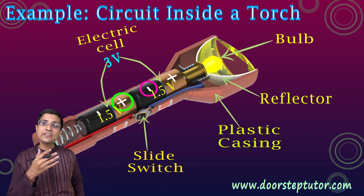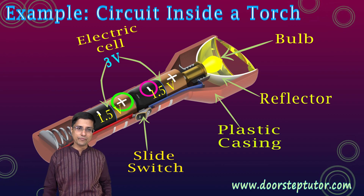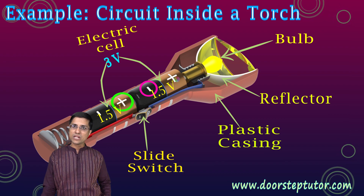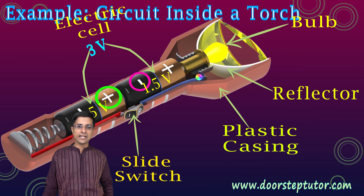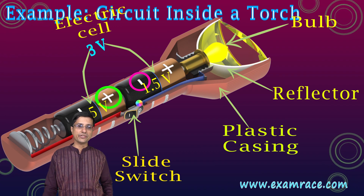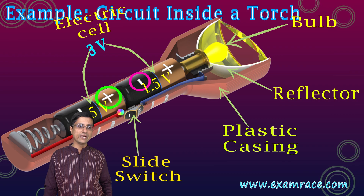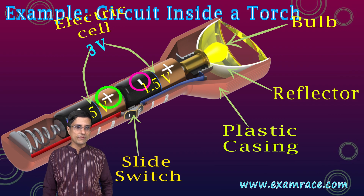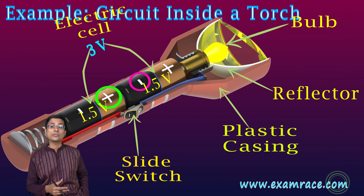Let's see how electricity flows inside this torch when it is on. The electric current starts flowing from the anode, goes inside the filament, comes out the other side, and travels through the wires. Finally, it reaches the bridge of the switch — this inverted V shape — travels through the switch, exits from the other inverted V, goes up to the metal plate, and finally reaches the cathode.